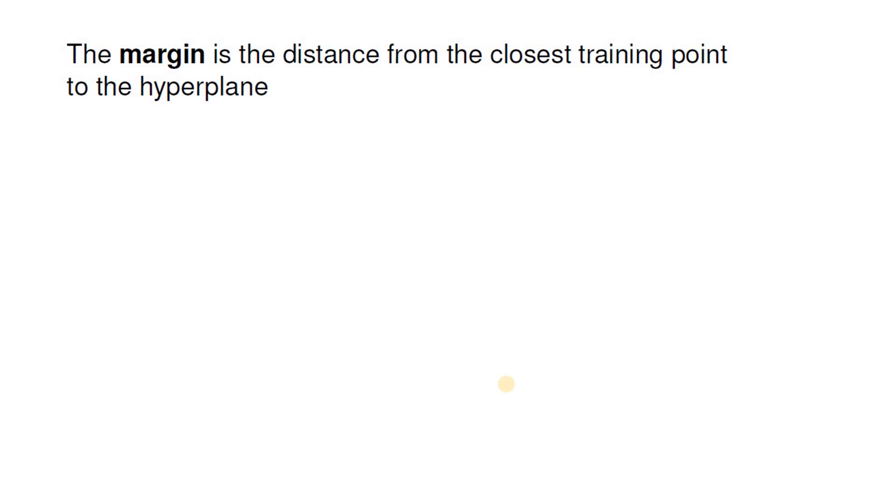This is the distance of any training point from the hyperplane. Now for all possible training points we will calculate this and we will be taking the minimum one.